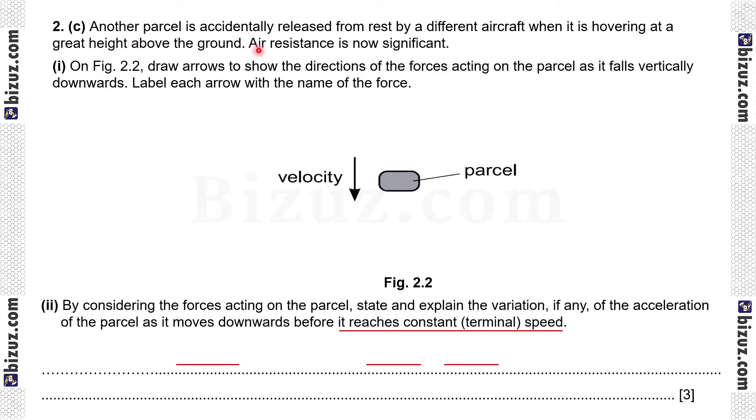2c. Another parcel is accidentally released from rest by different aircraft when it is hovering at a great height above the ground. Air resistance is now significant. On figure 2.2, draw arrows to show the direction of the forces acting on the parcel as it falls vertically downward. Label each arrow with the name of the force. So this is the parcel falling vertically downward. So two forces will be, one is weight and another is against the motion that is air resistance.